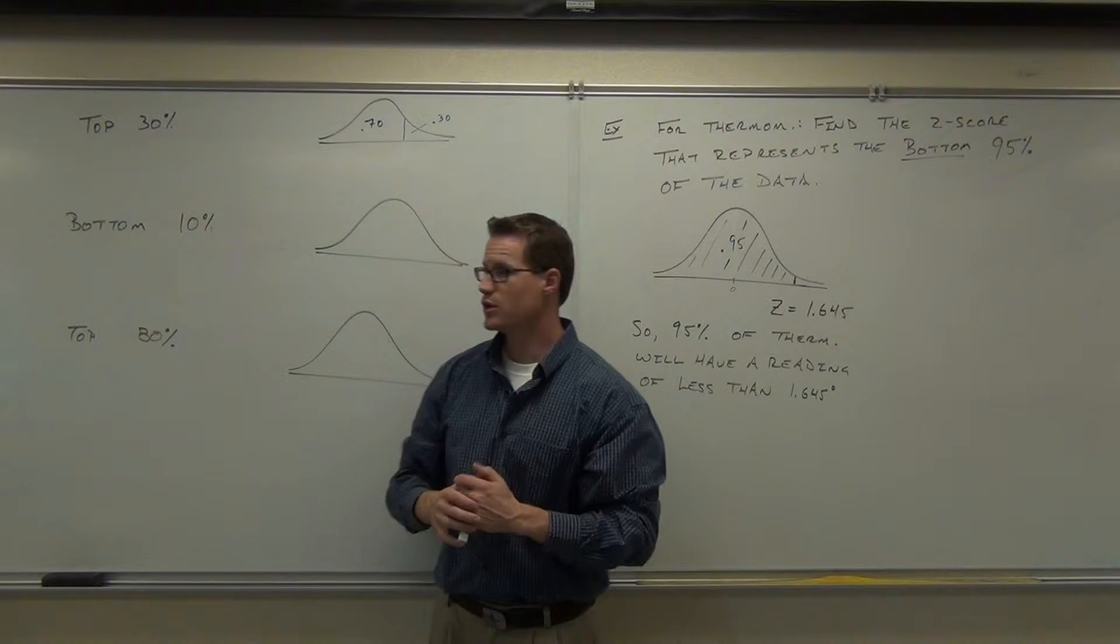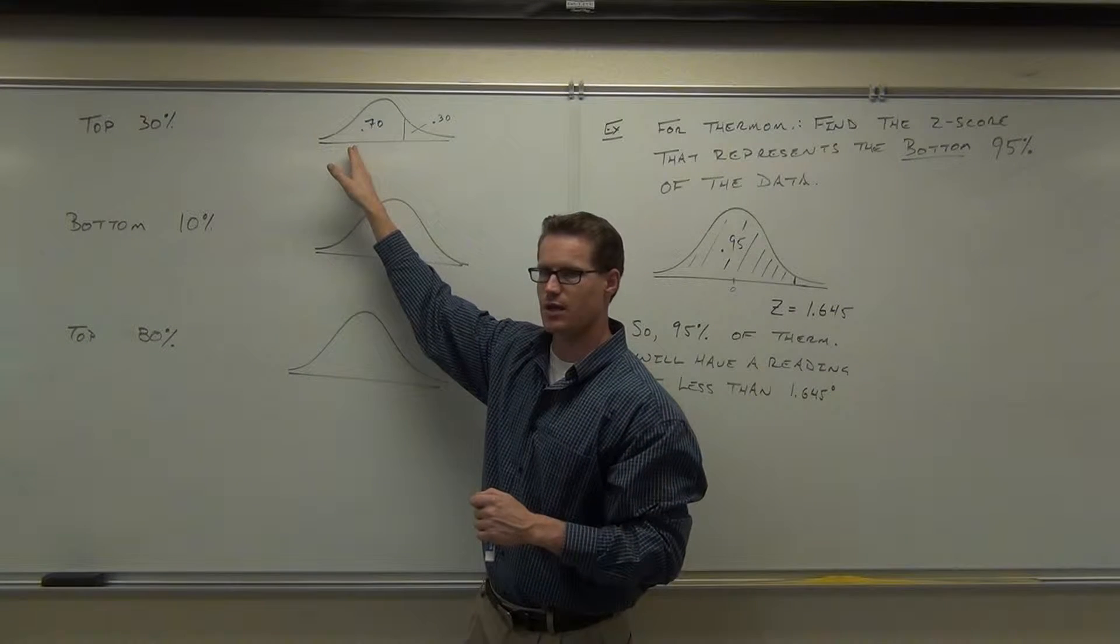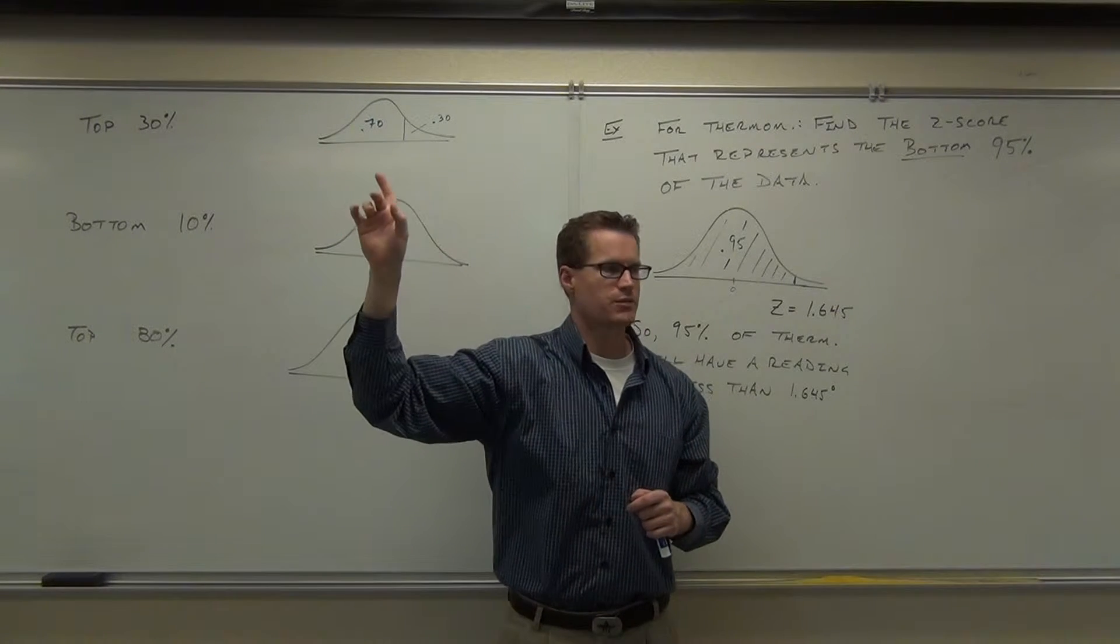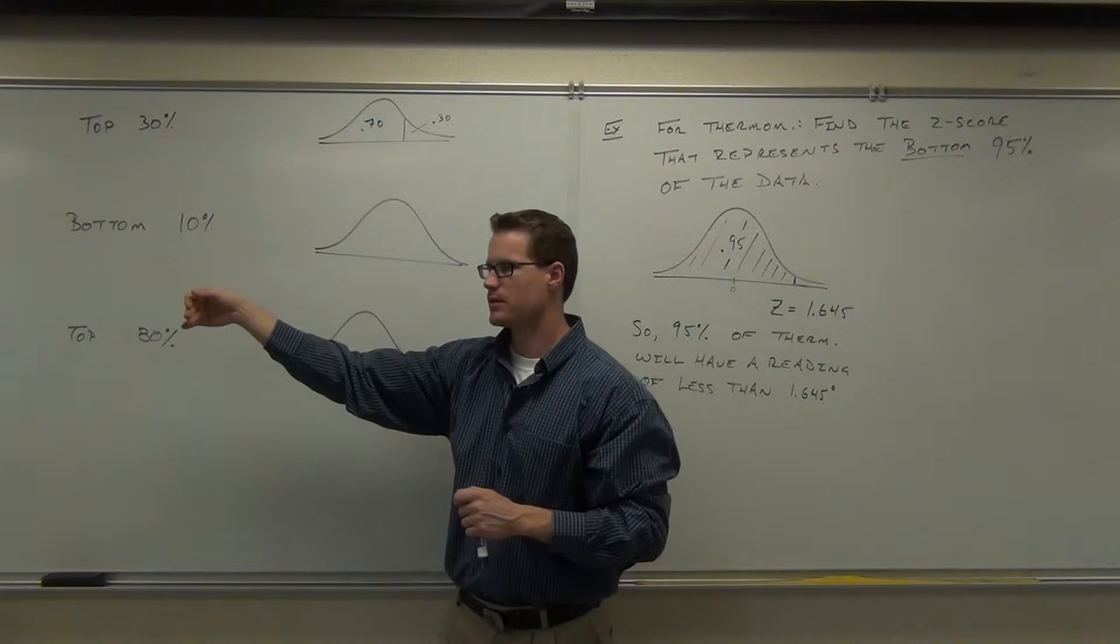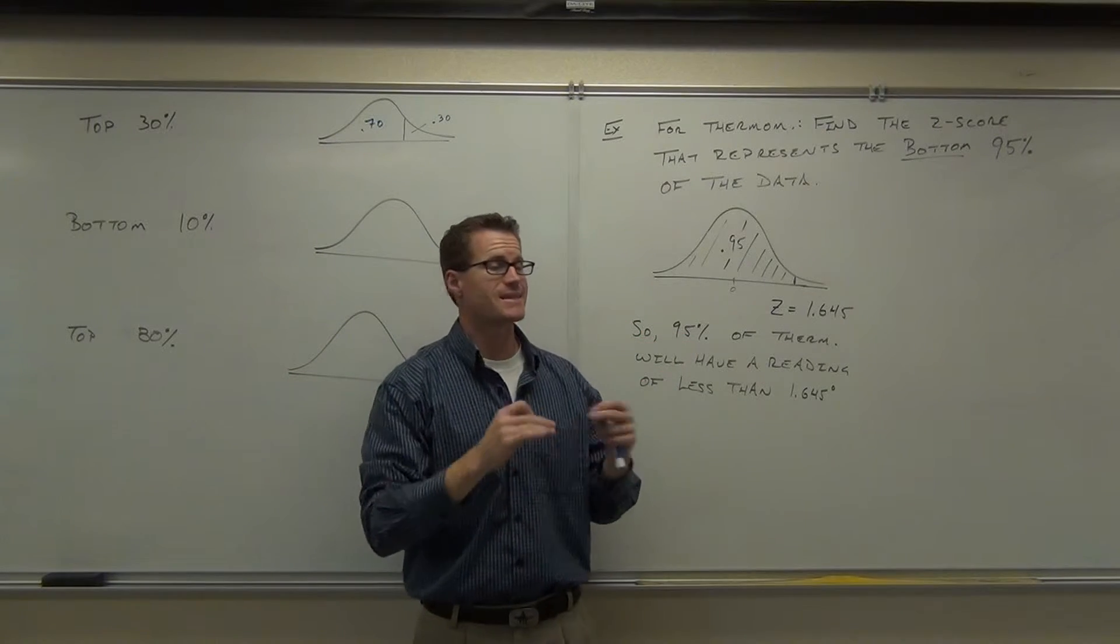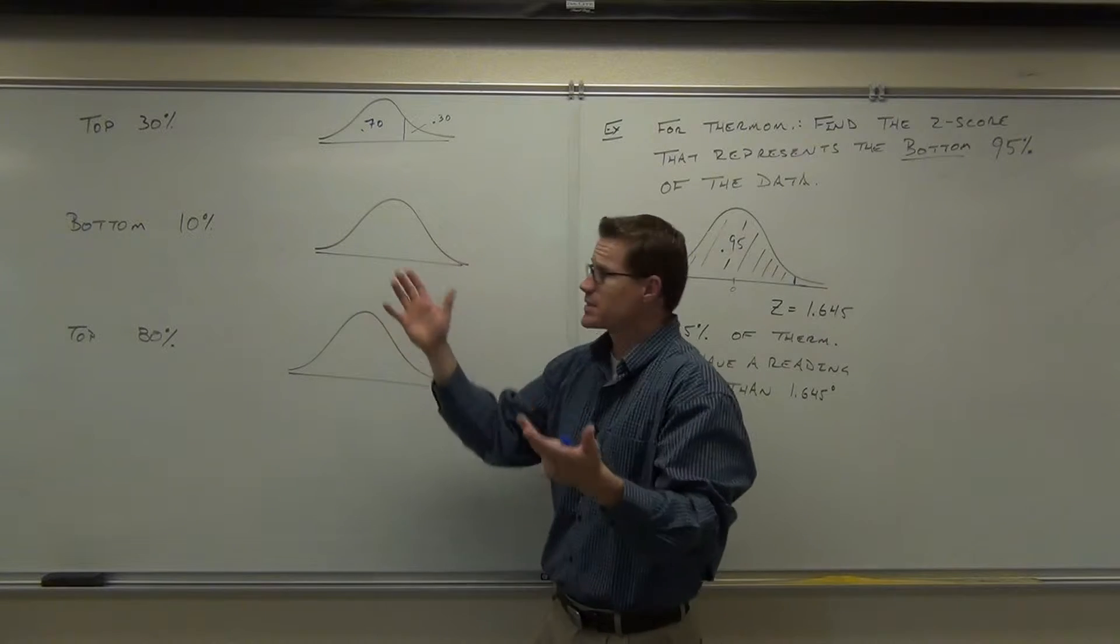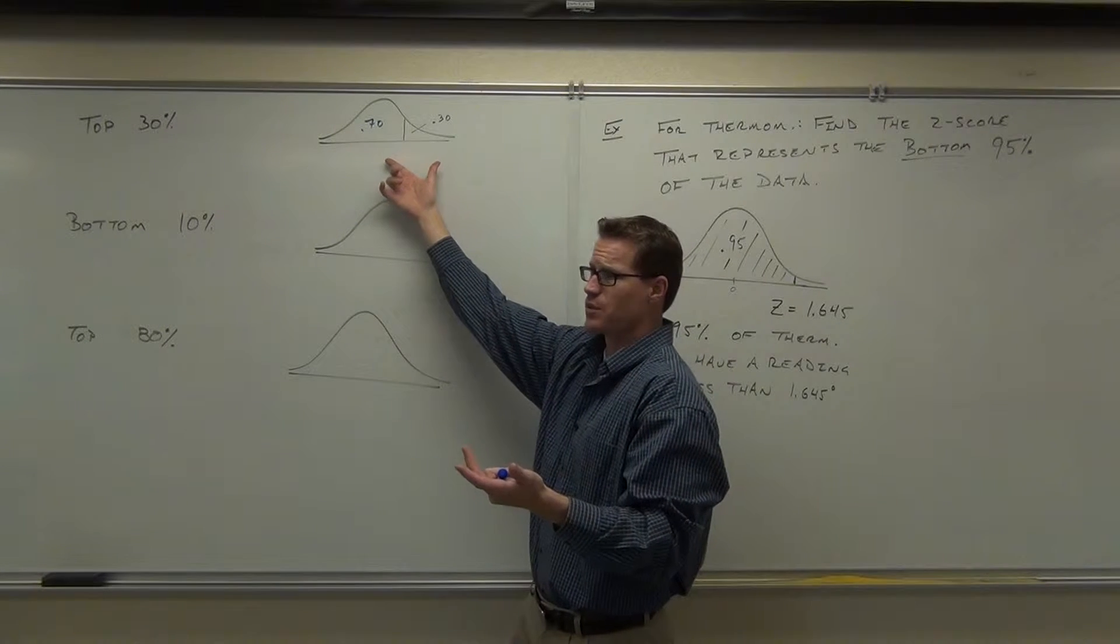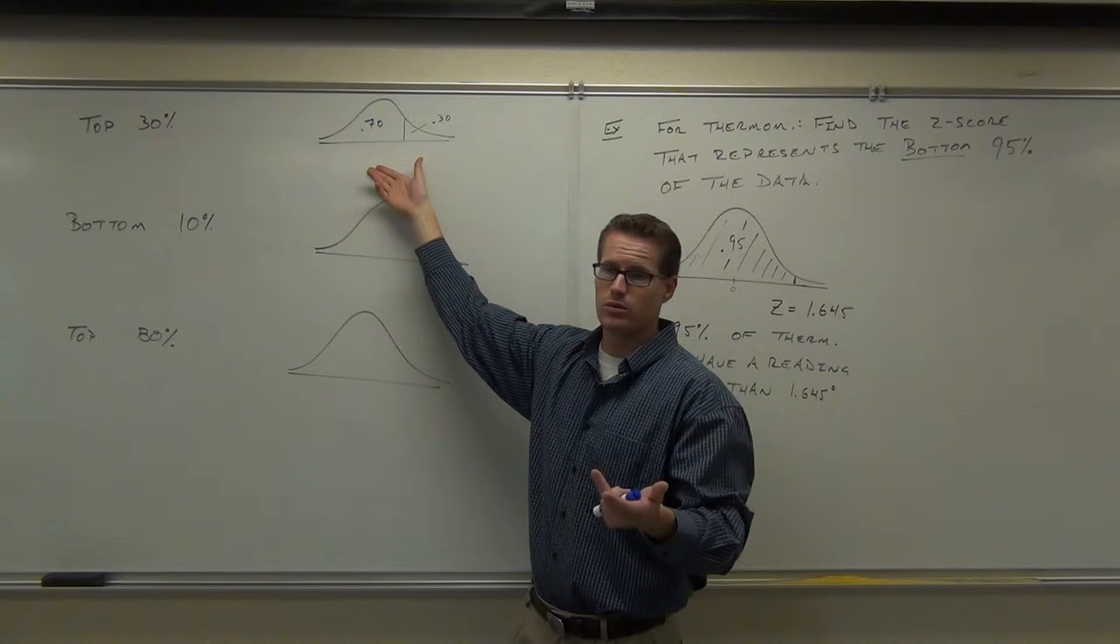So if I look up 0.30, you know what I would have? I'd have the bottom 30%, not the top 30%. So when you draw your picture, draw both sides of it. And just look up the area that's on the left. So the top 30%, you need to know that the top 30% is the same thing as the bottom 70%. It's the same. It's identical. If I had asked you for the bottom 70%, wouldn't you draw me that picture? I hope so, because it's the same.